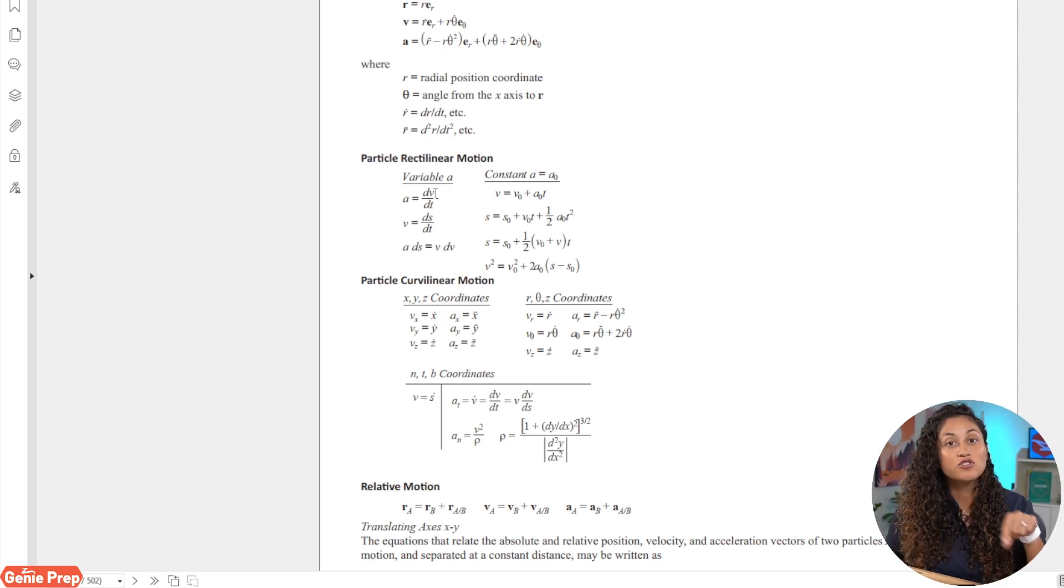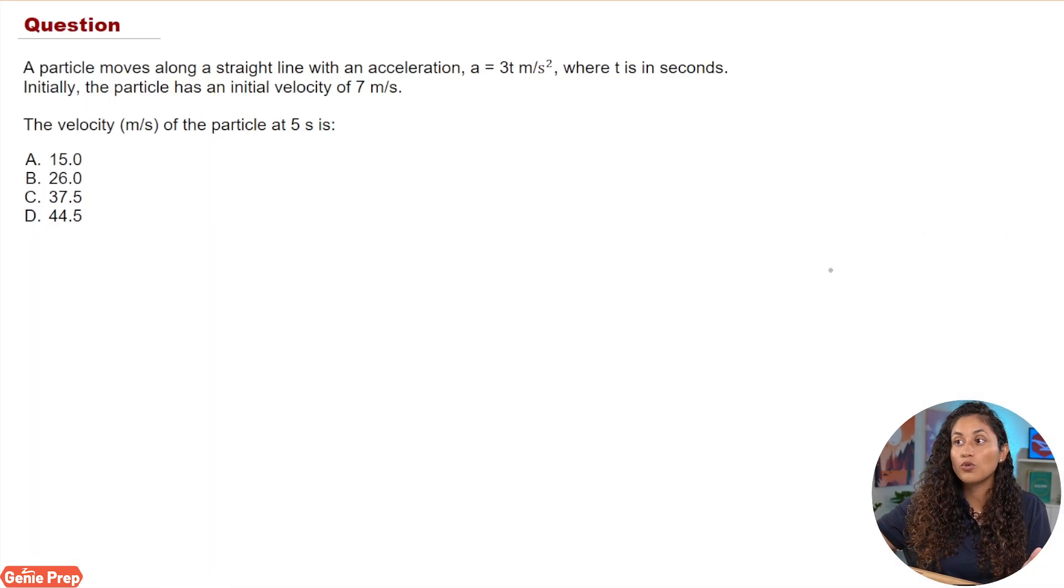So what you're going to need to do here is integrate both sides, and then if you do that you're going to have the velocity is equal to the integral of a times dt. Now when you set up your integral, the only thing you've got to watch out for is the initial velocity that was given to us. We have an initial velocity of 7 meters per second, so just watch out for that. With that, why don't you guys give this problem a try and then in a little bit we'll go over it together.